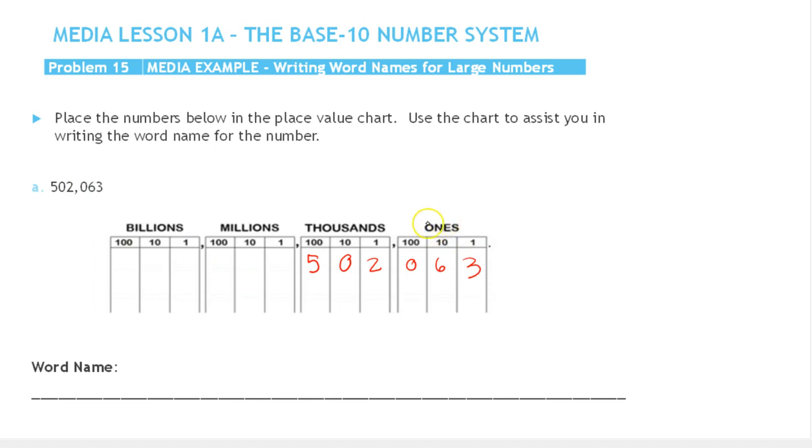Now let's write this word name. We're going to start from the left and first write the word name for this 502. In every grouping, you write the name between zero and a thousand, so: five hundred two.